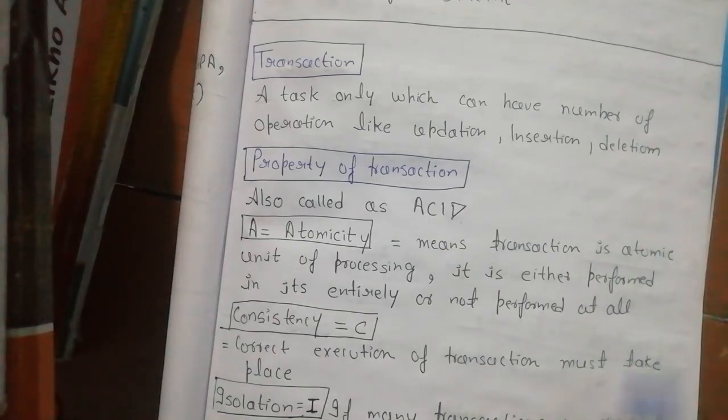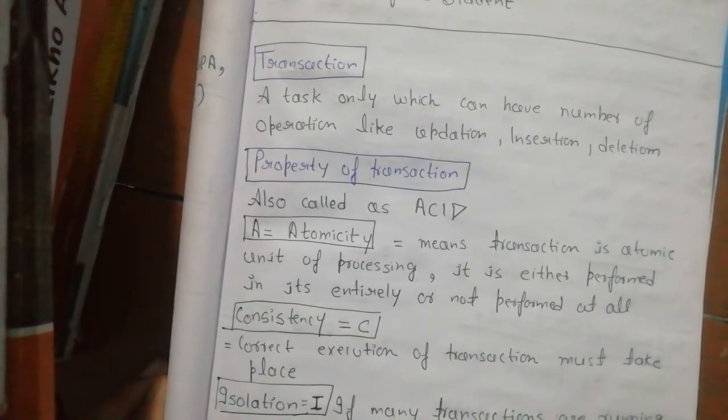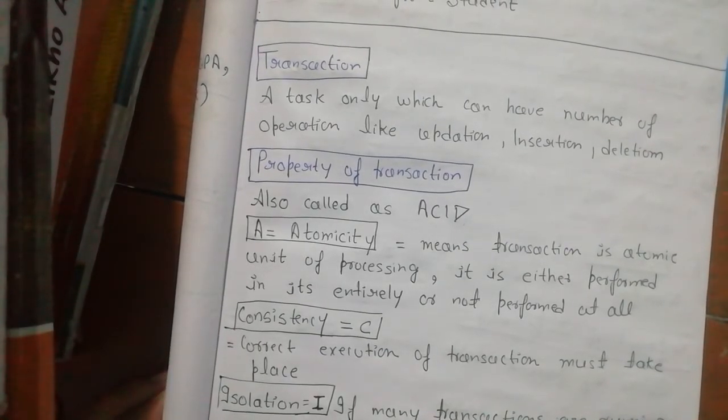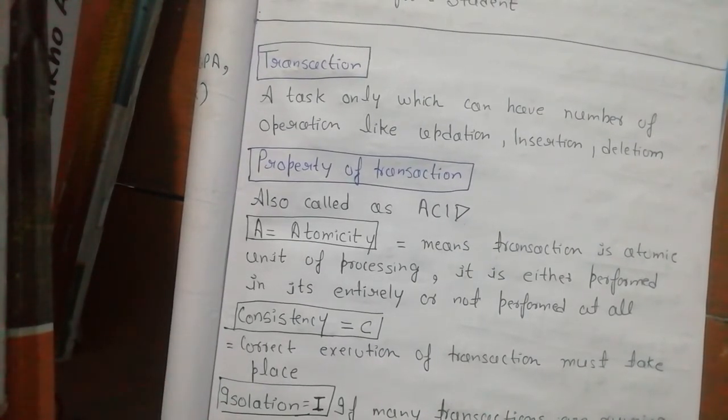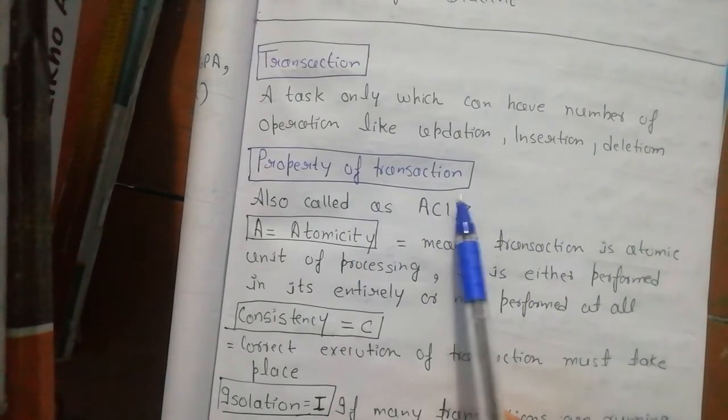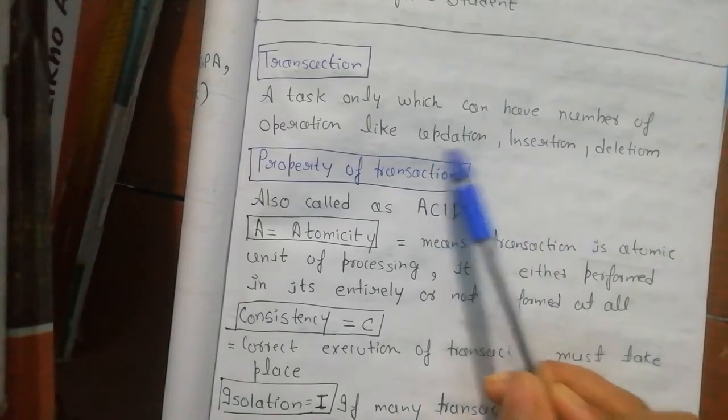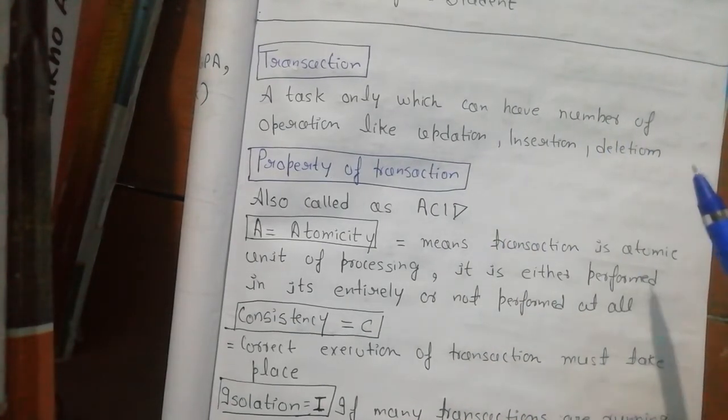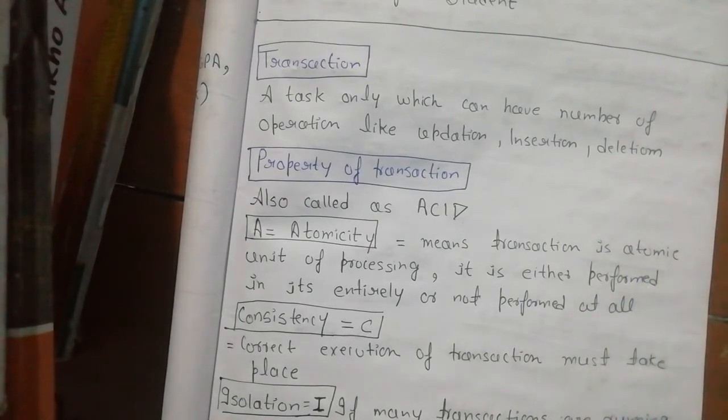In this video I will tell you about transactions and their properties which are ACID. First of all, what is a transaction? A transaction is a task which can have a number of operations like updation, insertion, deletion. We use these commands while creating a table; this will come later.